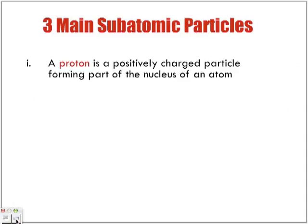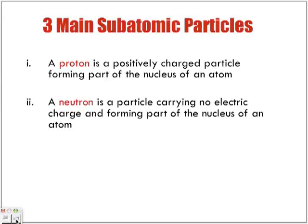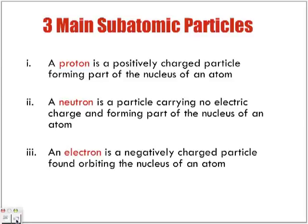Let's recap the three main subatomic particles. A proton is a positively charged particle forming part of the nucleus. A neutron is a particle carrying no electric charge, also in the nucleus. An electron is a negatively charged particle found orbiting the nucleus of an atom.